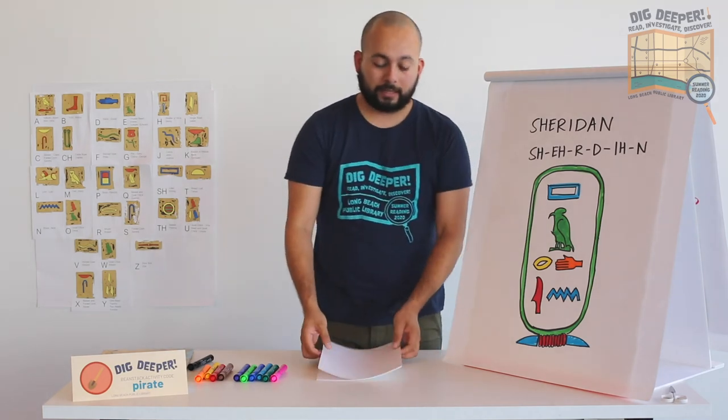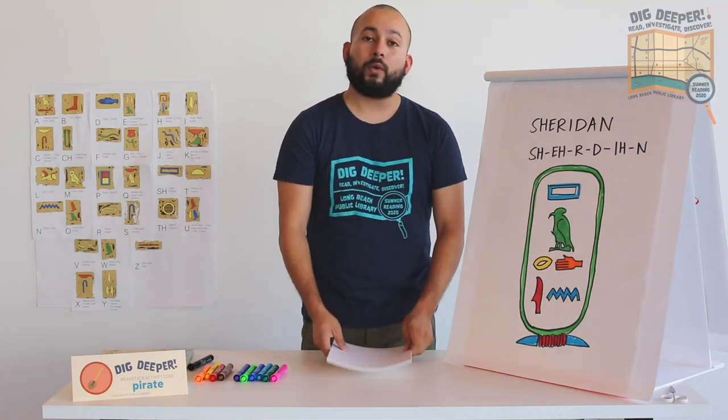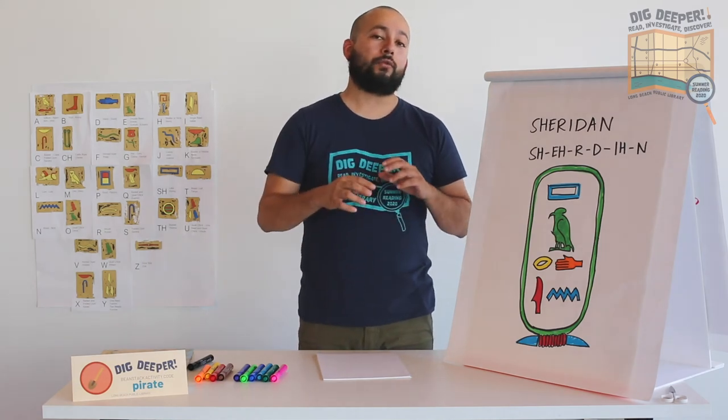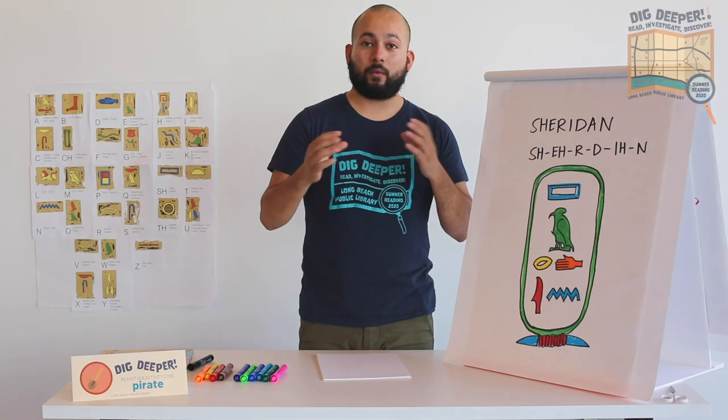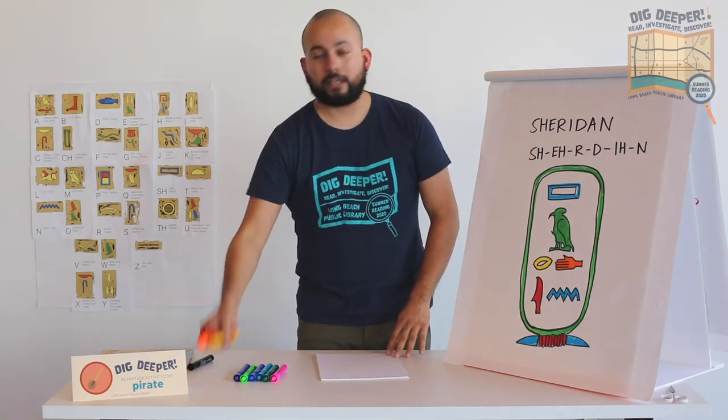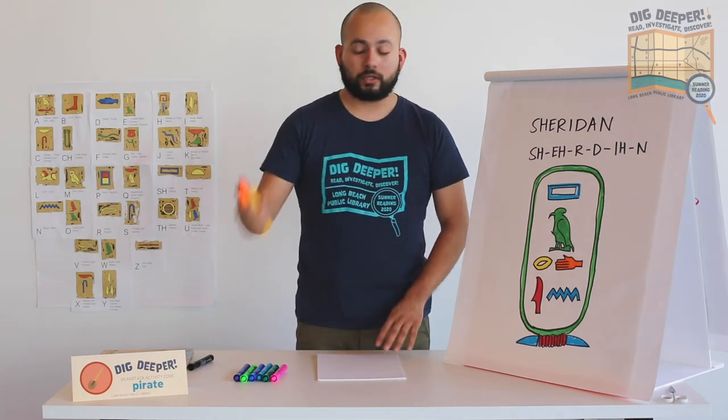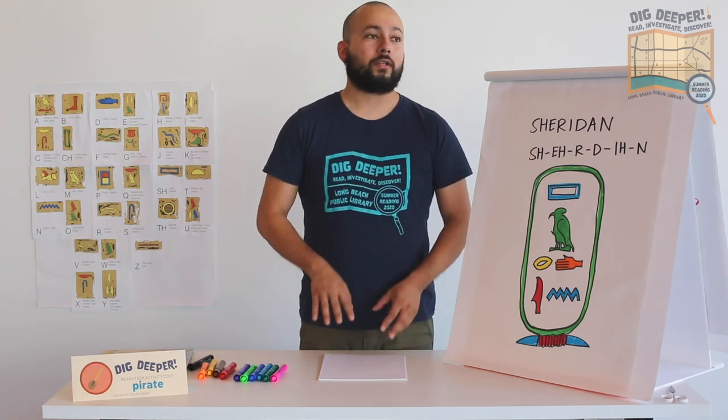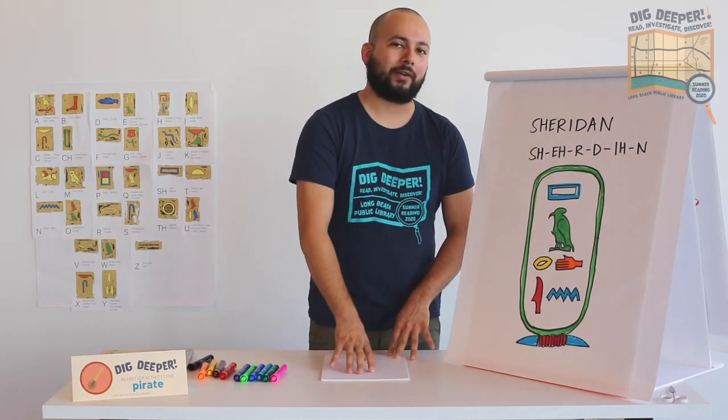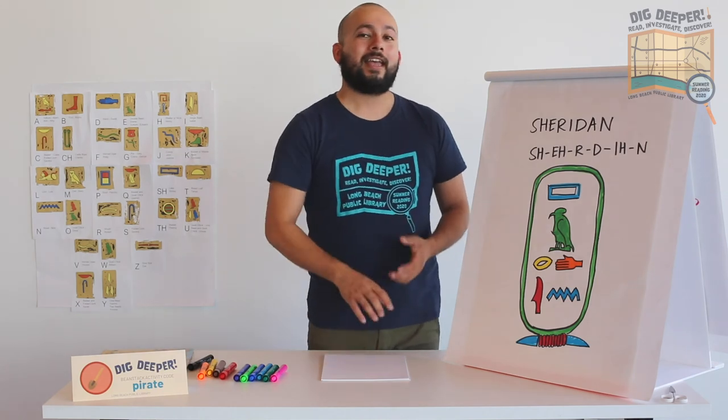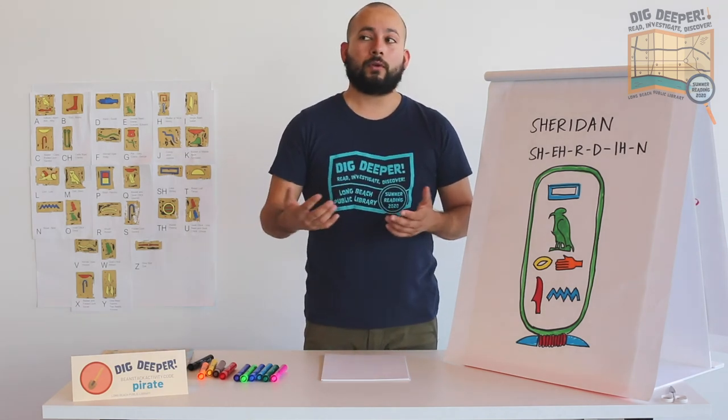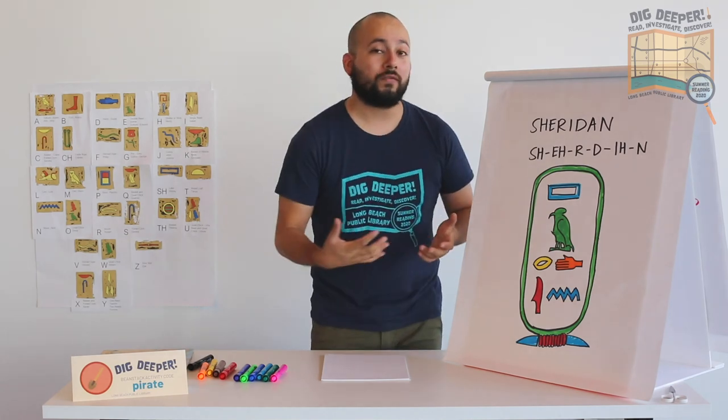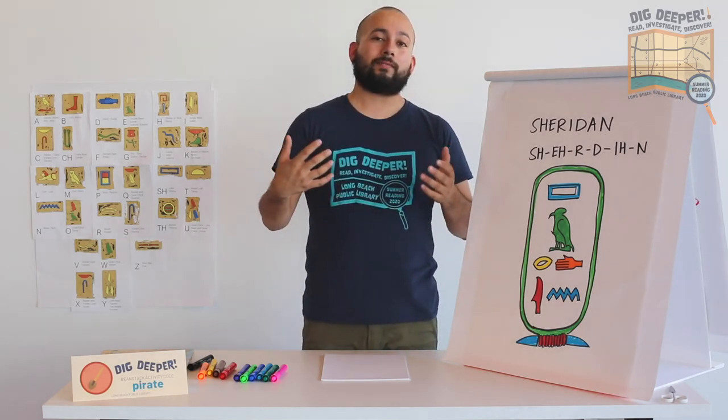Pretty cool, right? So you can take some of that paper that you've got, figure out which symbols represent your name. Click on the link below if you need a little bit more detail about which symbols. Take your markers, take your illustration tools you have, really work it out, and then get artsy. And then what you can do is you can take that cartouche with your name in hieroglyphs magically protected in it and put it on the door of your room or maybe perhaps on your secret stash of treasures that you've got in your room. Really whatever you've got going on.